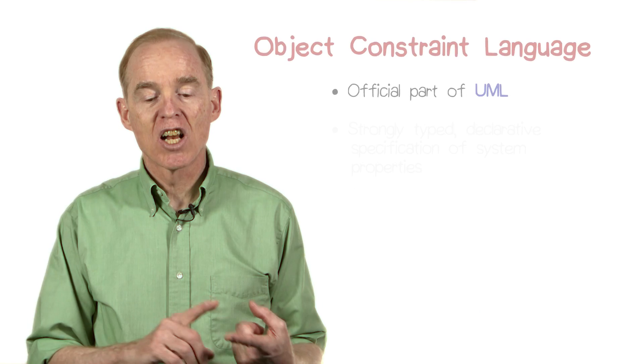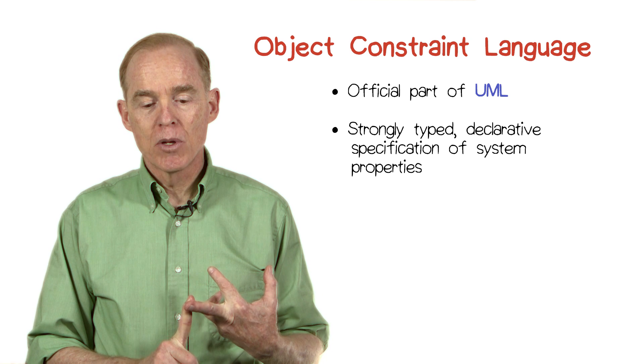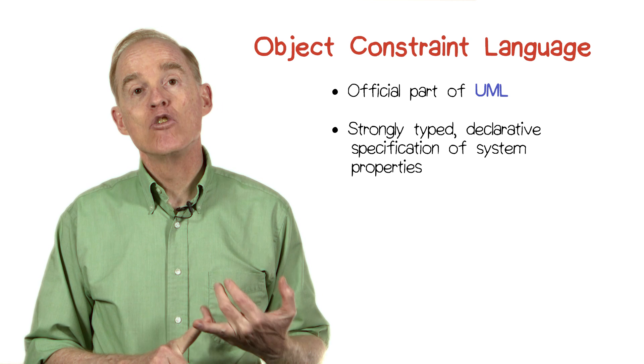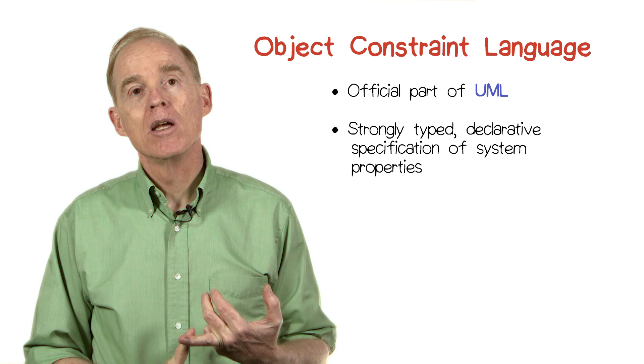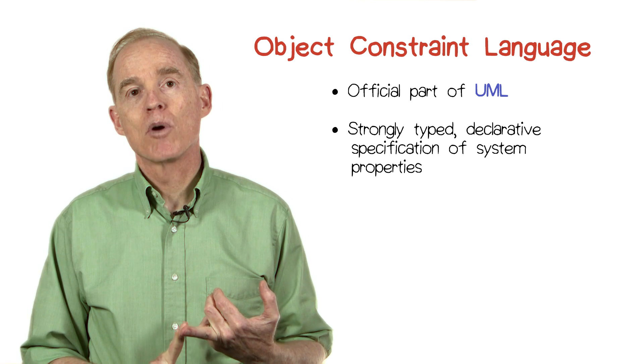OCL is a language — it's not a programming language, it's a specification language. It's declarative, it's strongly typed, and it allows you to specify the functional details of system properties.